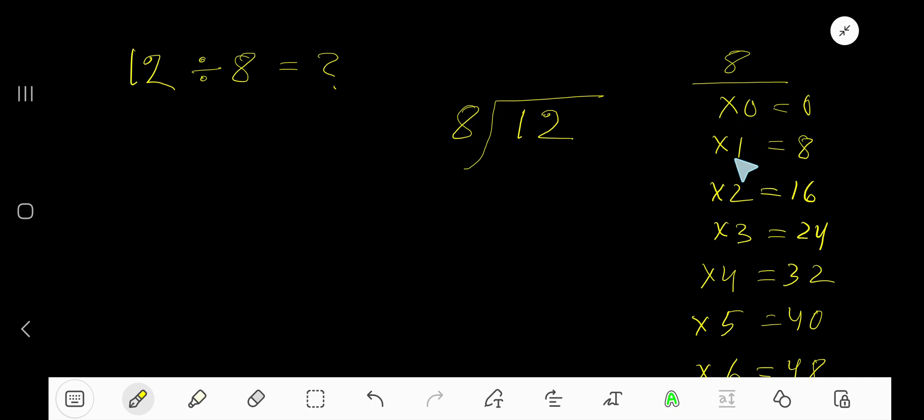0 times 8 is 0, 8 times 1 is 8, 8 times 2 is 16, 8 times 3 is 24, 8 times 4 is 32, 8 times 5 is 40.